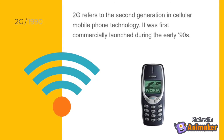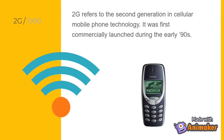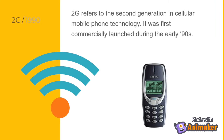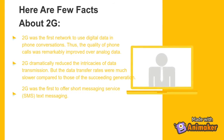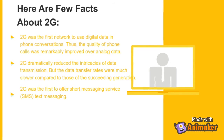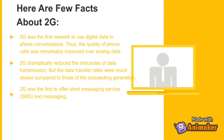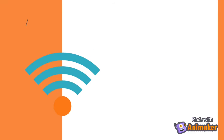2G refers to the second generation in cellular mobile phone technology. It was first commercially launched during the early 90s. 2G was the first network to use digital data in phone conversations, so the quality of phone calls was remarkably improved over analog. 2G dramatically reduced the intricacies of data transmission, though data transfer rates were much slower compared to the succeeding generation. 2G was also the first to offer SMS text messaging.